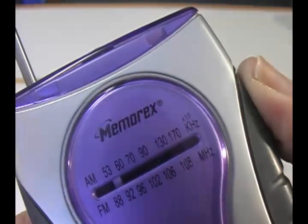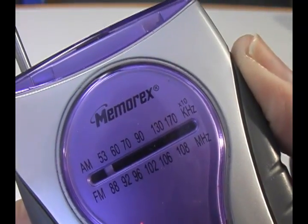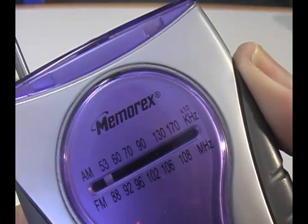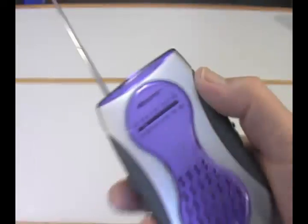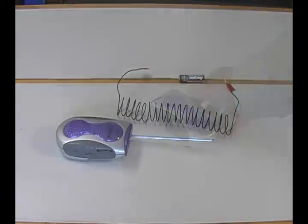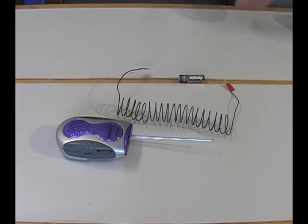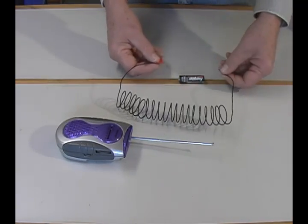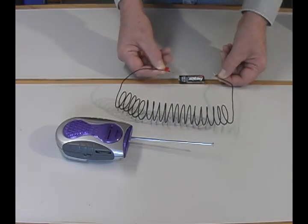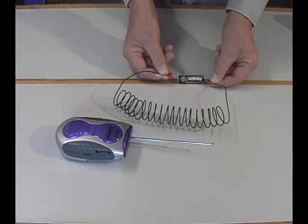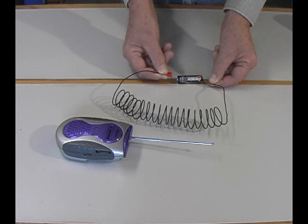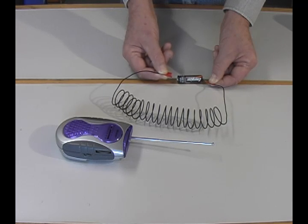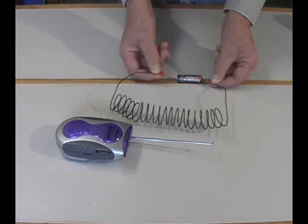Tune the AM radio to a quiet spot. That is, you're not tuned to a radio station. Sit the radio close by with the volume turned up. Then tap the ends of the wire to the terminals of the battery. Connecting and disconnecting the circuit, you will hear a static pulse on the AM radio. You have detected electromagnetic radiation.